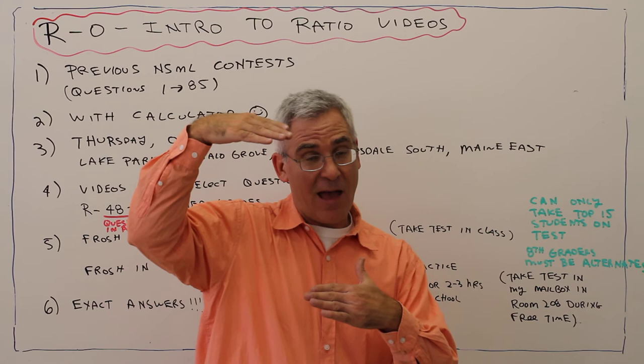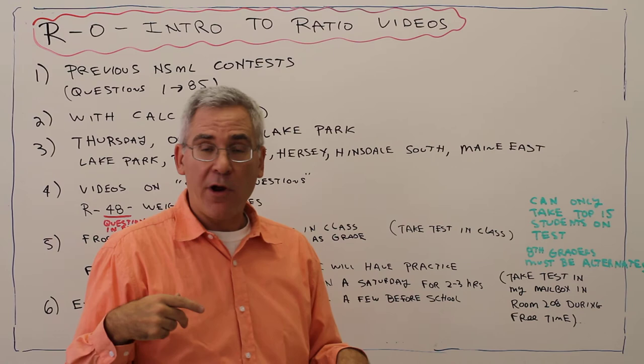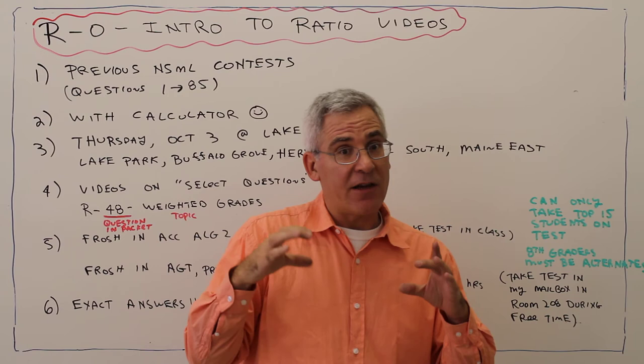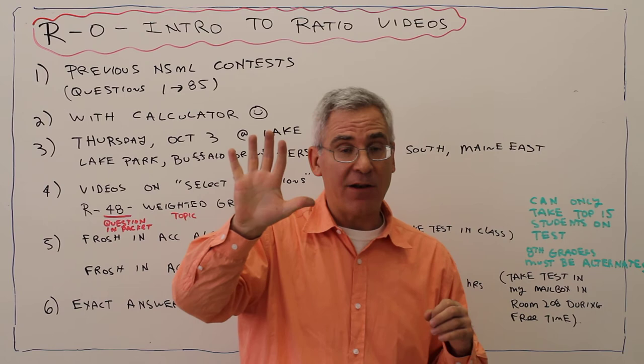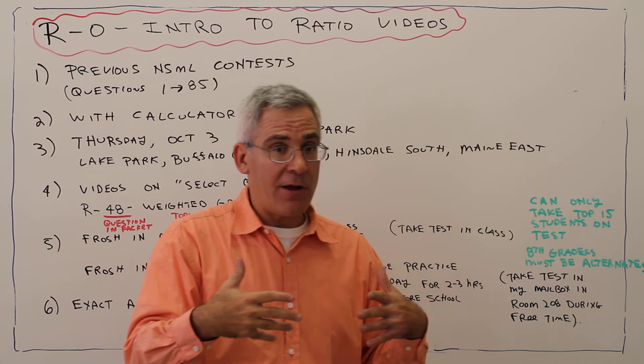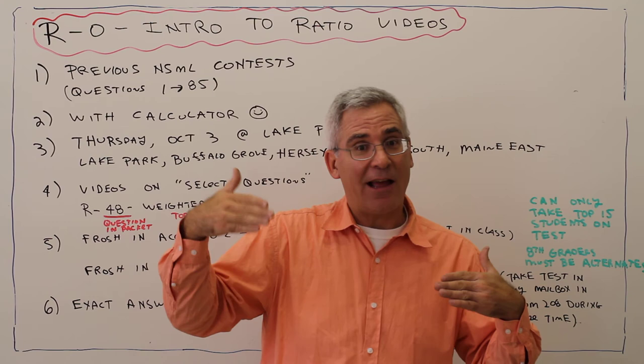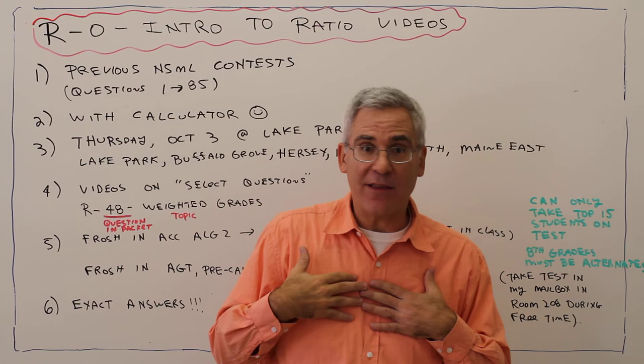One more thing: 8th graders are welcome to be on the team, but they cannot be in the contestant role. There are two types of people on the math team — the five designated contestants and the alternates. So 8th graders must be alternates. There have been times where they've had perfect scores, but their scores can't count for the team total. They have to wait until they're actually in high school. I did not make that rule.